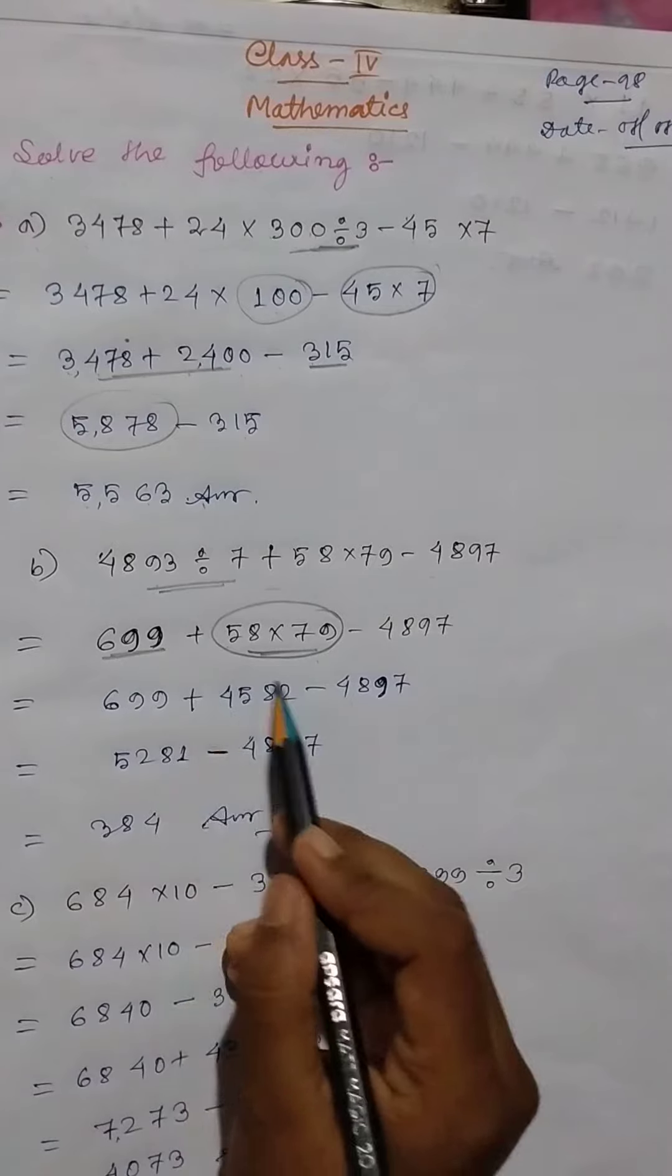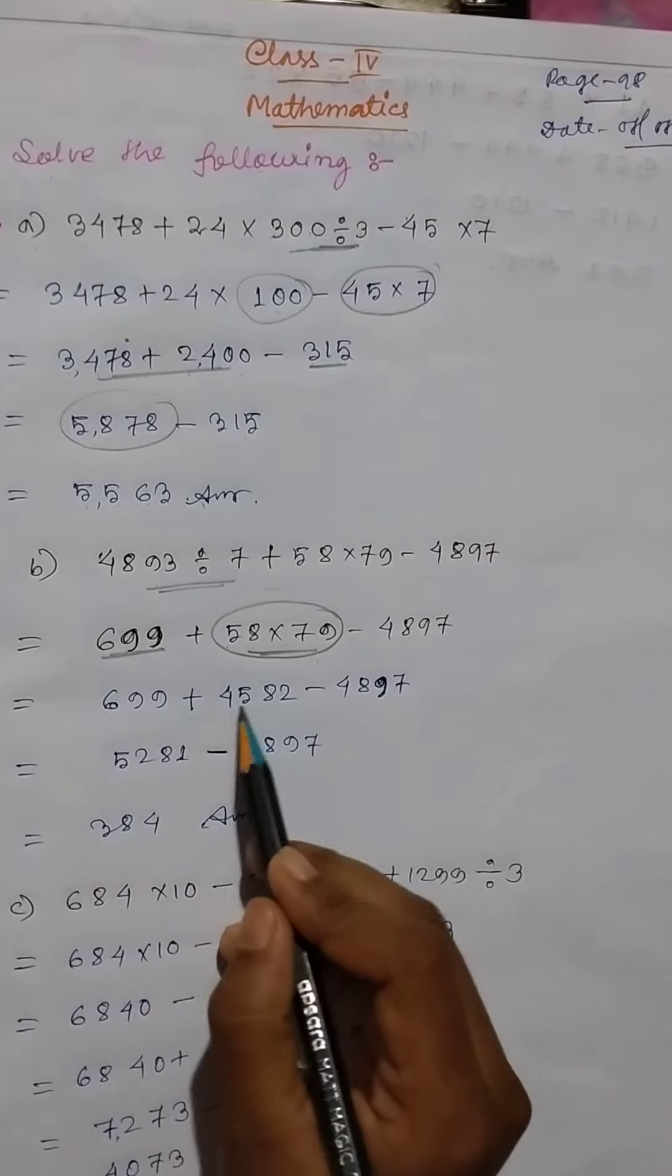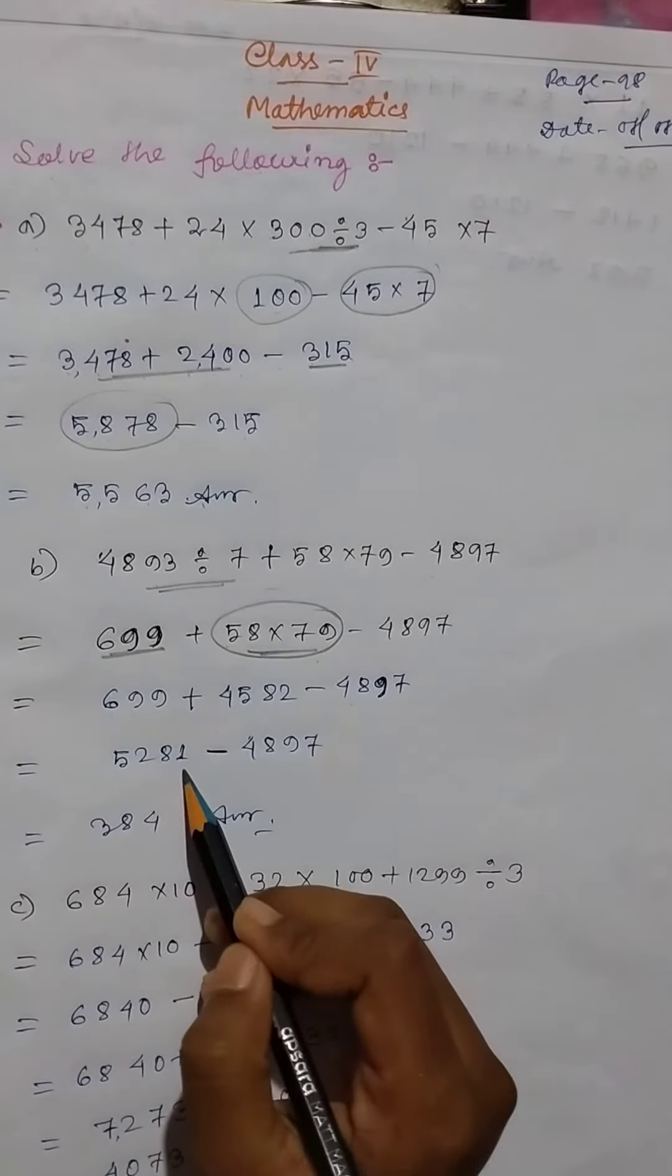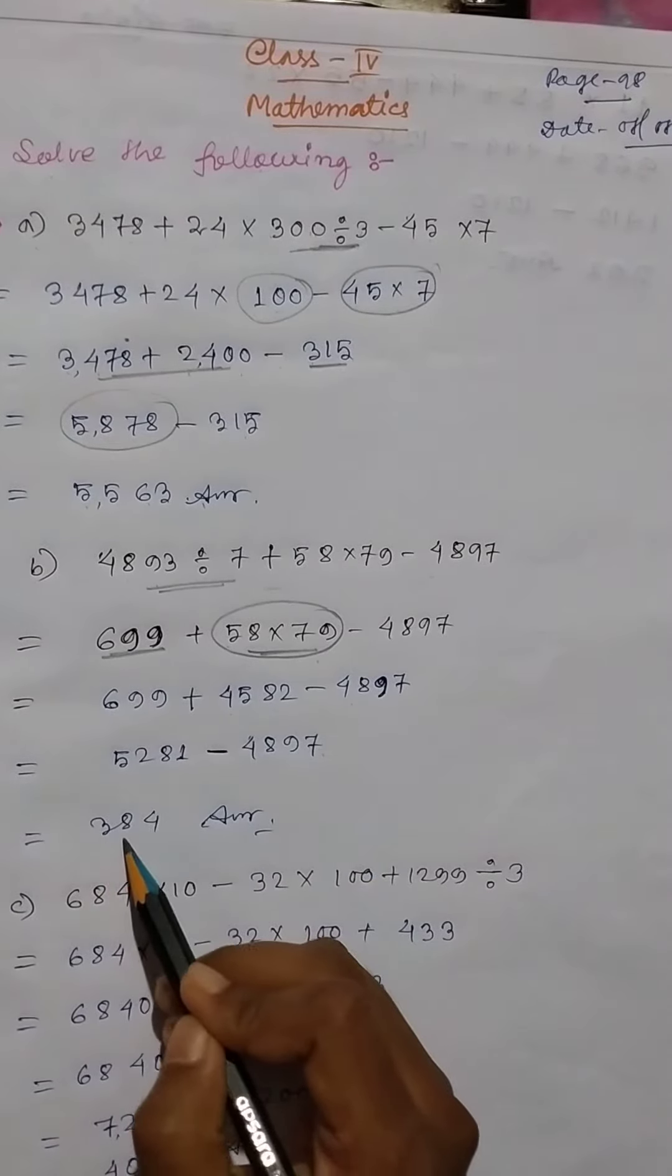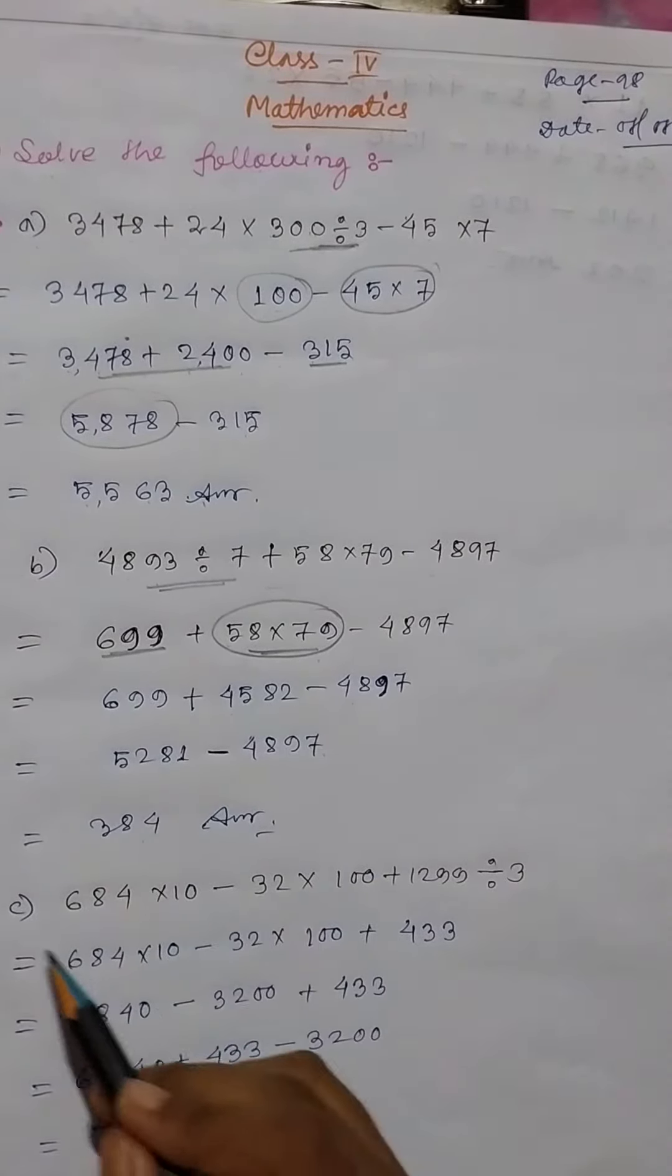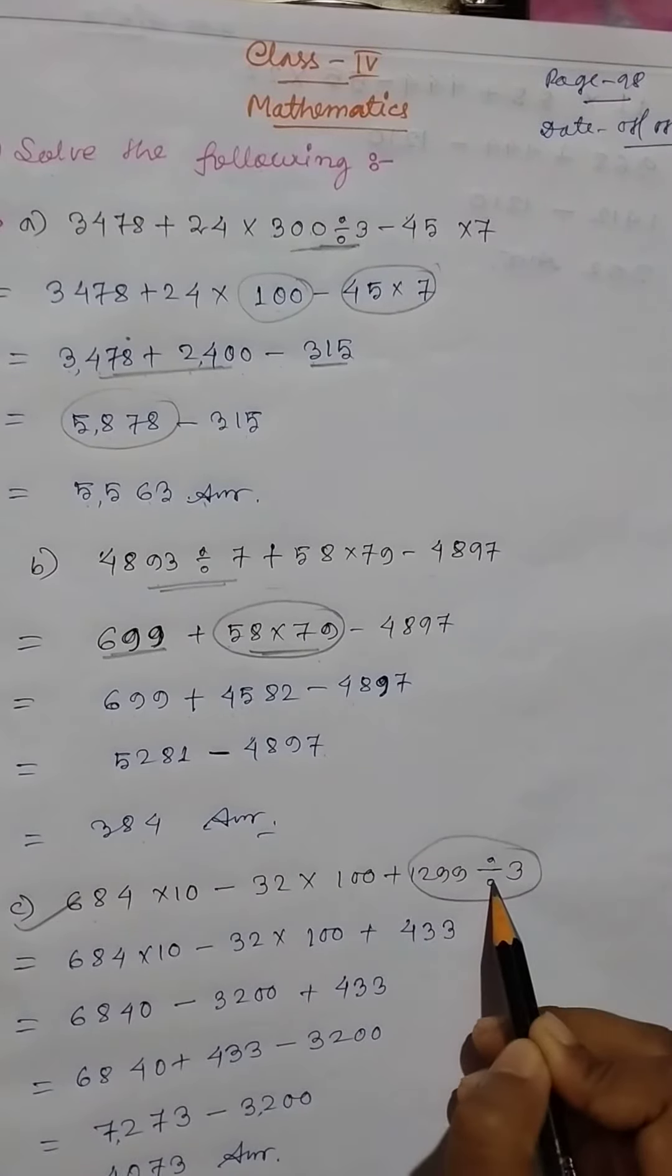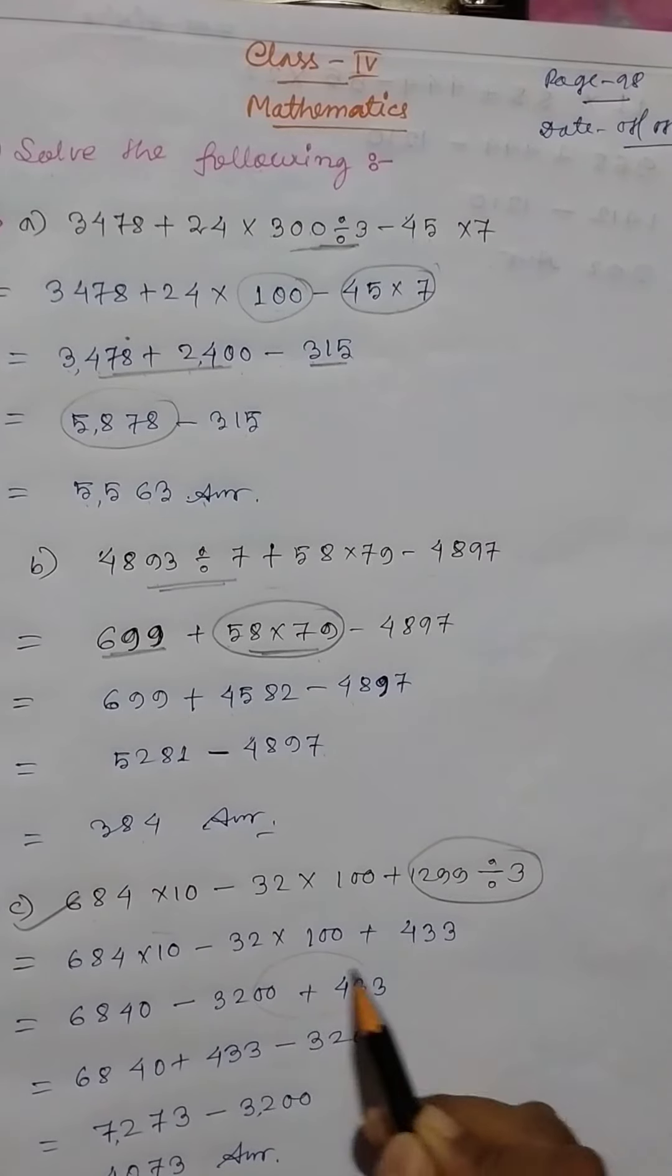And then addition, 699 plus 4582 equals 5281. And then minus 4897, so the answer is 384. Same way you will do it. First division, then multiplication, then addition, and then last subtraction.